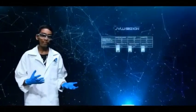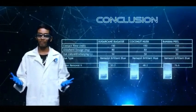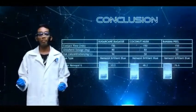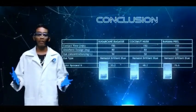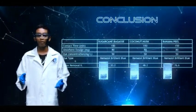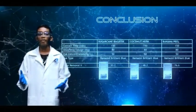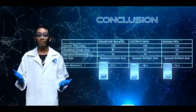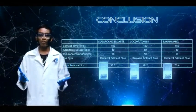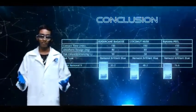Our conclusion is, biomass activated carbon also known as BAC was successfully developed using sugarcane bagasse, coconut husk and banana peel. All the three BAC which was synthesized without chemical modification able to remove the dye in wastewater efficiently. Banana peel was identified as the most efficient BAC in this study.